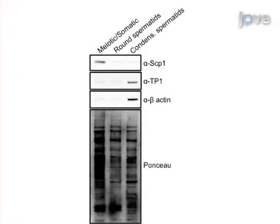Once cell fractions are combined, purity can be further determined by western blot analysis of the cell lysates. Common markers of meiotic cells are the synaptonemal complex 1 proteins. Common markers of condensing spermatids are transition proteins or protamines.